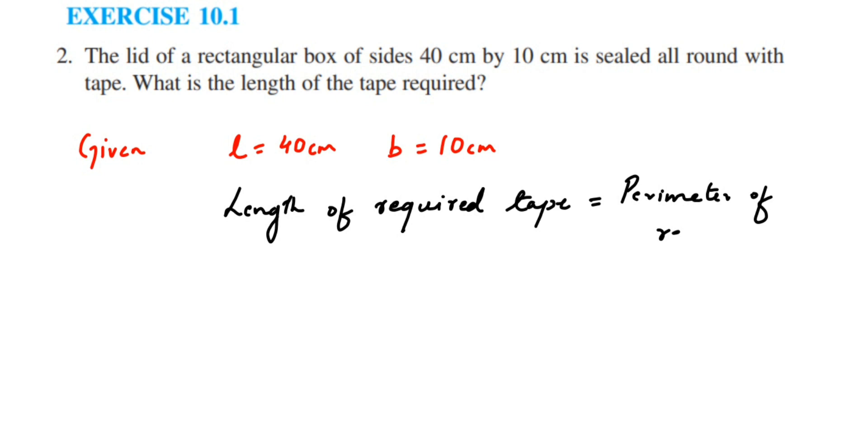This is equal to, perimeter formula is 2 into l plus b. We have to just substitute the values here. So length is 40, so 40 plus breadth is 10, so 40 plus 10 is 50. So 2 into 50 which is equal to 100. So we require 100 centimeter of tape to seal the lid of the rectangular box.